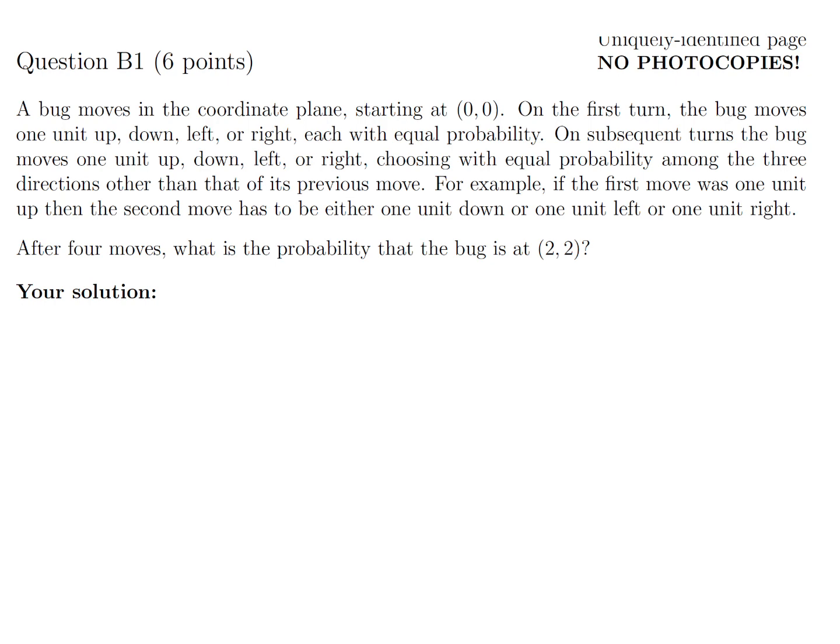A bug moves in the coordinate plane, starting at (0,0). On the first turn, the bug moves one unit up, down, left, or right, each with equal probability. On subsequent turns, the bug moves one unit up, down, left, or right, choosing with equal probability among the three directions other than its previous move.